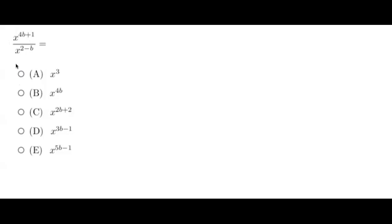And as long as those x's match, what we're going to do if it's being divided is we're going to subtract. So we can actually rewrite this as x to the 4b plus 1 minus 2 minus b. So basically you're almost combining those into one term and you're subtracting the exponents.